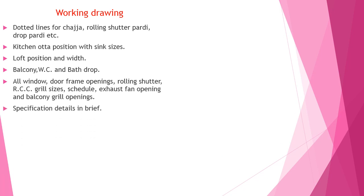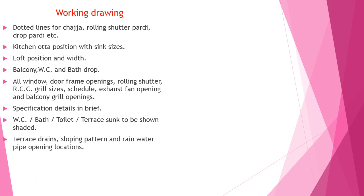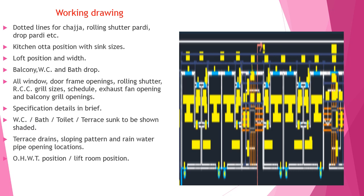Specification details in brief — such as whether it is a 230mm brick or 115mm brick etc. — have to be noted. The sanction area should be totally shaded. Terrace drains, sloping pattern, rainwater direction, and everything has to be marked in the drawing. Overhead water tank positions and lift room position have to be marked in the drawing, as shown in the adjoining drawing.